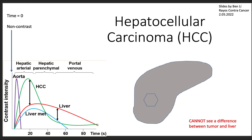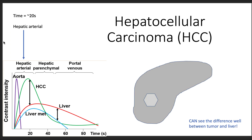We inject IV contrast, and now it begins to flow through our arteries. The first phase is the arterial phase, and we can see that, as expected, the aorta, or the largest artery in the body, fills with the IV contrast during the arterial phase. We see that the liver gets a little bit brighter, and in this case, hepatocellular carcinoma gets very bright. So you can see HCC well on the arterial phase.